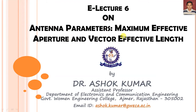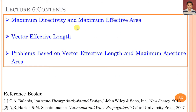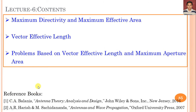This is an important lecture of this series. The following contents will be addressed: directivity, effective aperture, relation between maximum directivity and maximum effective aperture, the relation between gain and effective aperture, the vector effective length, and problems based on vector effective length and maximum aperture area. The contents of this lecture are prepared with the help of reference books.